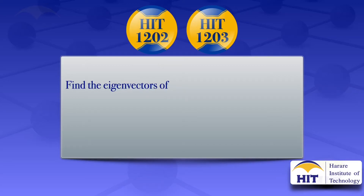In this tutorial, I'm going to find the eigenvectors of the 2 by 2 matrix A, which is equal to 1, 2, 3, 2.